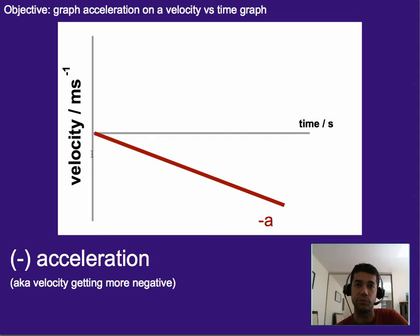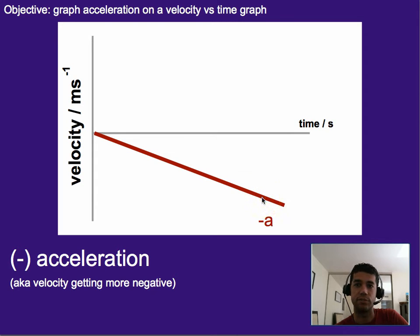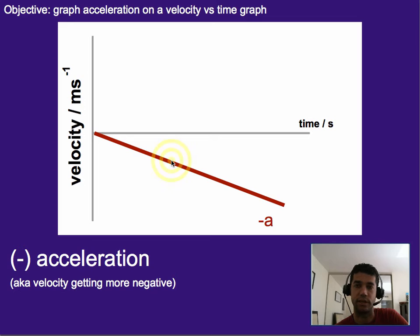A negative acceleration would be a slope where velocity is getting more and more negative, or heading more towards the negative range. In this case, a negative slope gives us negative acceleration, where literally the velocity started at zero and as time went on it got less and more negative, and therefore it's negative acceleration.